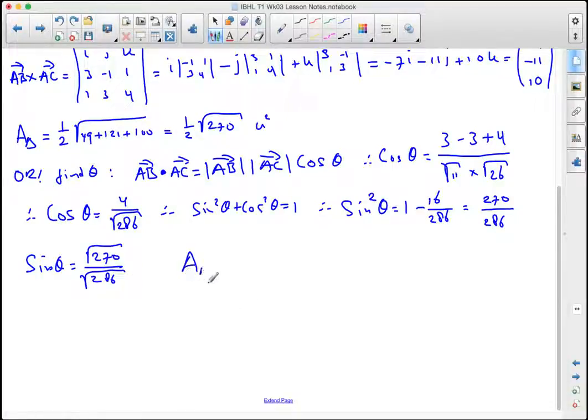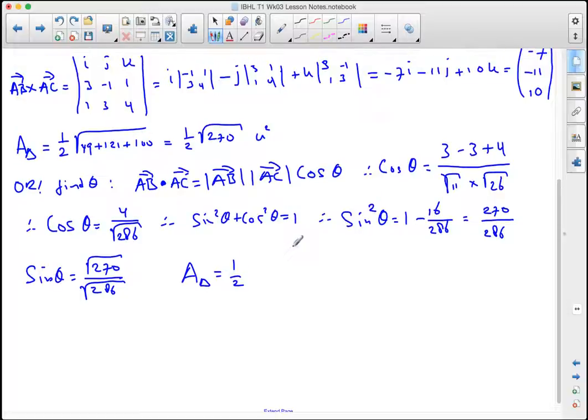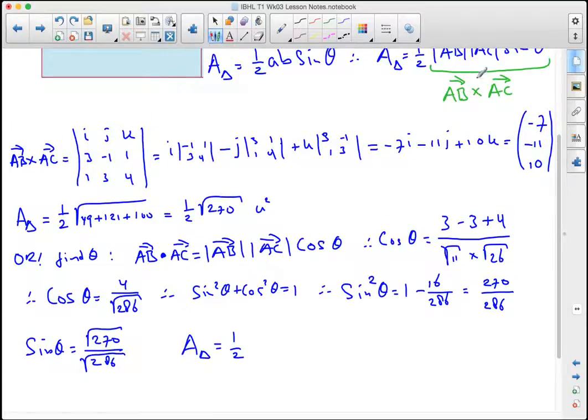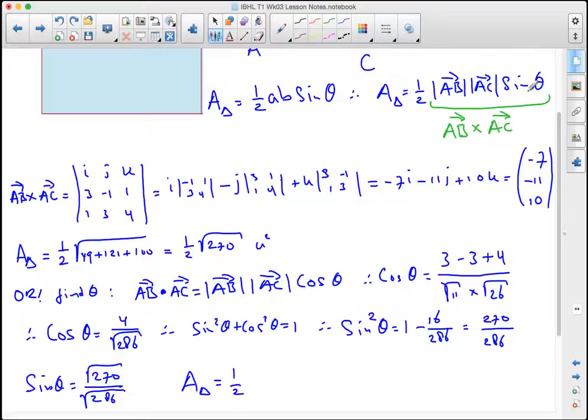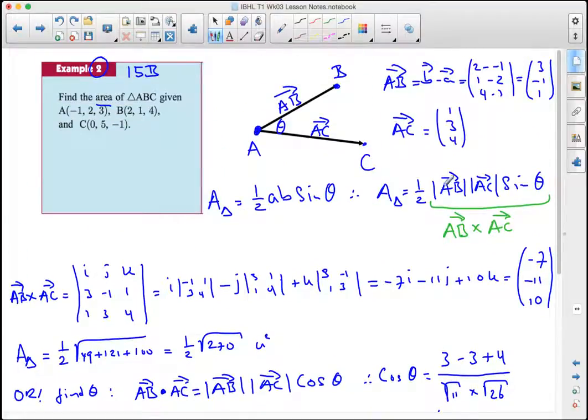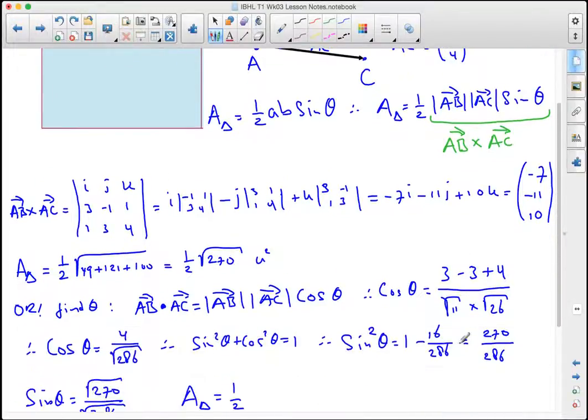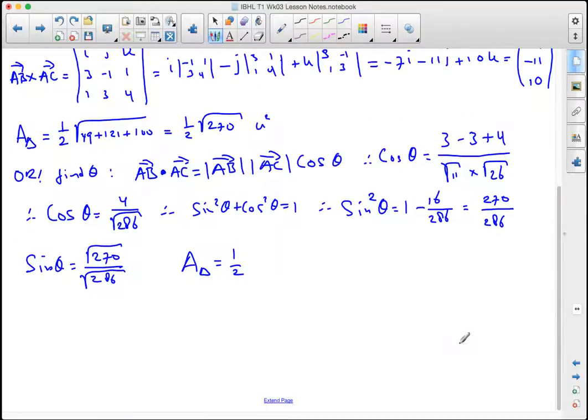The area of the triangle is one half, and let's go up there again, one half of AB and AC sine theta. Here it is. We need to move down again. One half of the length of AB, so that's the root of 11, times the root of 26, times the sine theta, so that's the root of 270 over the root of 286.